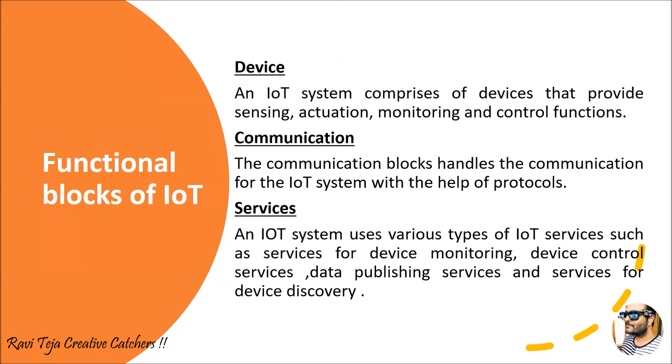Coming to the services block: the IoT system provides various services such as monitoring through a device, controlling through a device, data services, and device discovery. We can find devices like vehicle tracking, fleet tracking, or use a global positioning system (GPS). Data transfer services are also available, along with monitoring and control services. These are the major services integrated in the services functional block.